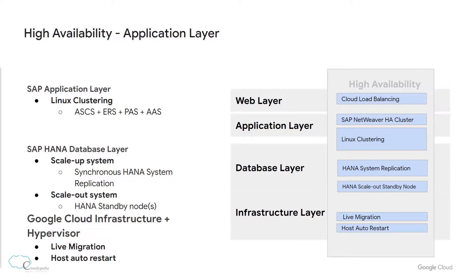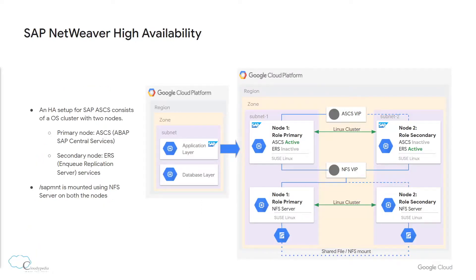We've covered the infrastructure layer and database layer. Next will be the application and web layers. High availability in the web layer can be achieved by having a Cloud Load Balancer. For the application layer, Linux clustering can be implemented. The SAP NetWeaver high availability cluster consists of two nodes: the primary node for the central services, and the secondary node for replication services, with a shared file system using NFS between them.